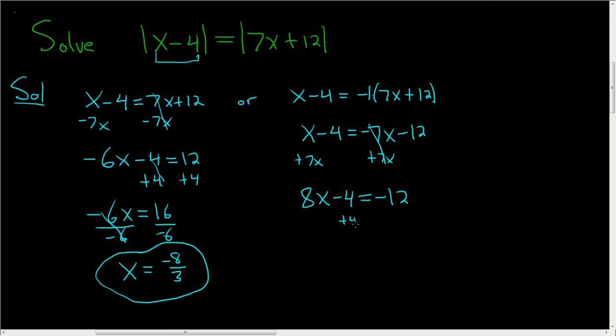Then add the 4 to both sides, so plus 4 plus 4. So 8x is negative 8, and then to finish, just divide by 8, and that leaves us with x equals negative 1. And that's it, that's the answer. I hope this helps.